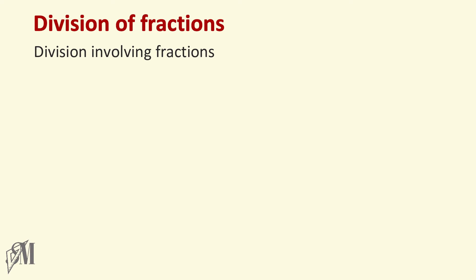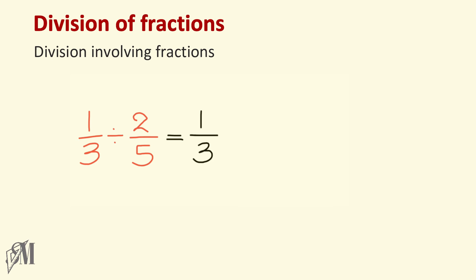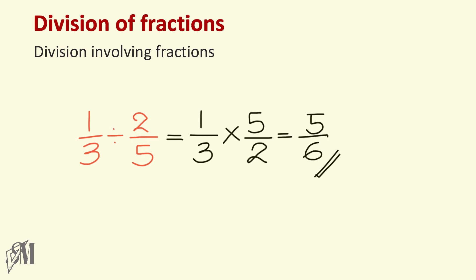The next section is division involving fractions. One over three divided by two over five: write the first fraction as it is — one over three — then replace division with multiplication and write the reciprocal of two over five, which is five over two. Perform the multiplication: one times five is five, and three times two is six, so the answer is five over six.